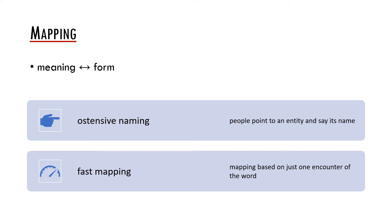One possible way children may map form to meaning is via ostensive naming. Ostensive naming refers to a situation when people point to an entity and say its name — for example, pointing at a doll and saying 'doll' or 'this is a doll.' This may be helpful, but the problem is that most words are not acquired this way. The child learns most words in non-ostensive contexts.